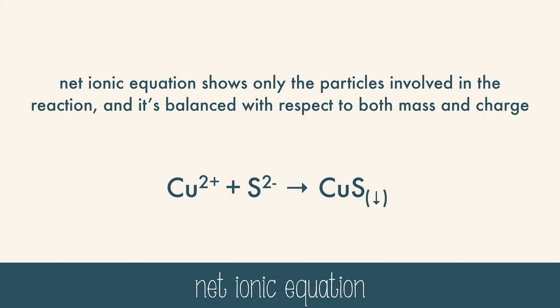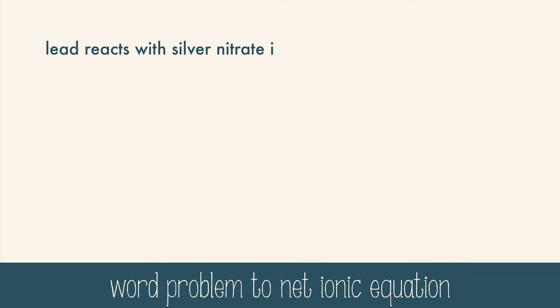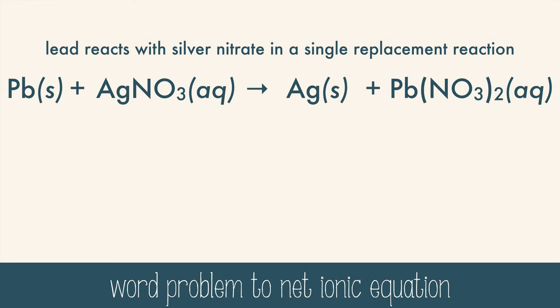But let's look at another one. Lead reacts with silver nitrate in a single replacement reaction. First, we have to write out the skeleton equation. We start with solid lead, and we'll end with solid silver because the metals switch positions in a single replacement reaction. Next we just have to balance it by adding a coefficient, a 2 in front of silver nitrate, and a 2 in front of silver. Now it's balanced.